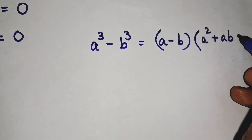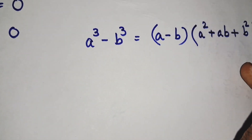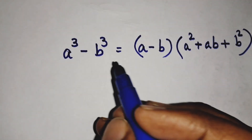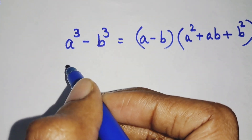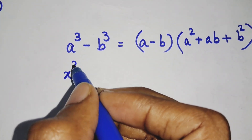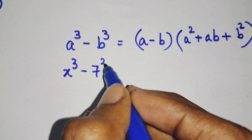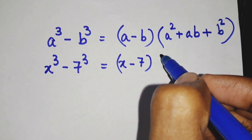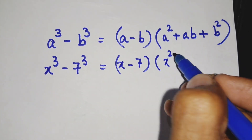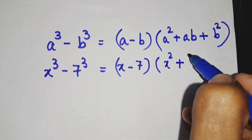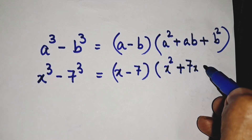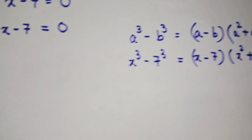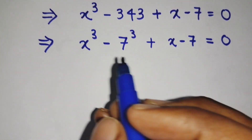We know this formula and we will apply it here where we have x cubed minus 7 cubed. So x cubed minus 7 cubed equals to x minus 7, into x squared plus 7 times x plus b squared, which is 7 squared, which is 49. We will now substitute this formula into the next step.